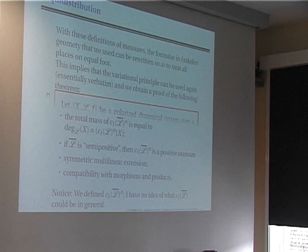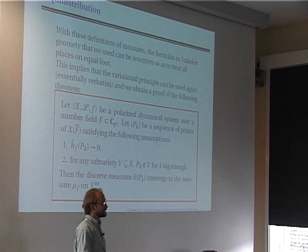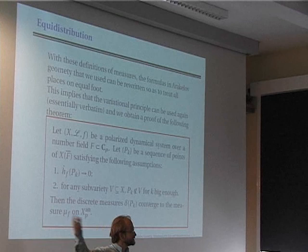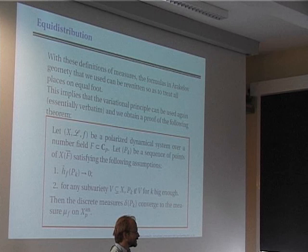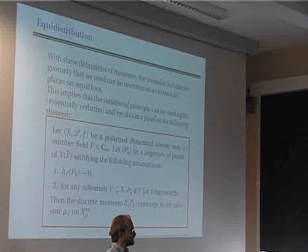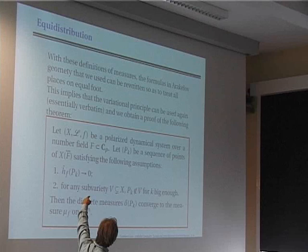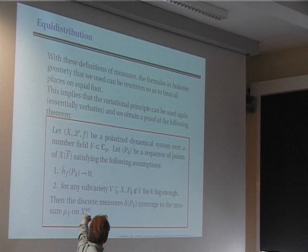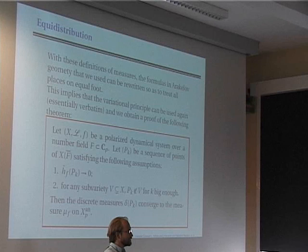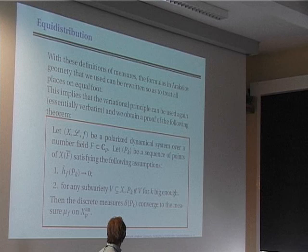With all these definitions, all the variational principle machinery from Arakelov geometry goes through exactly in the p-adic context. One just needed to understand these measures, how to make them live, and then all the machinery from Arakelov geometry goes through. So one gets the following equidistribution theorem for polarized dynamical systems over p-adic fields: if you take such a system and a sequence of points with height going to zero, and assume every subvariety contains only finitely many points, then the discrete measures δ_{P_k} converge to the measure μ_f.